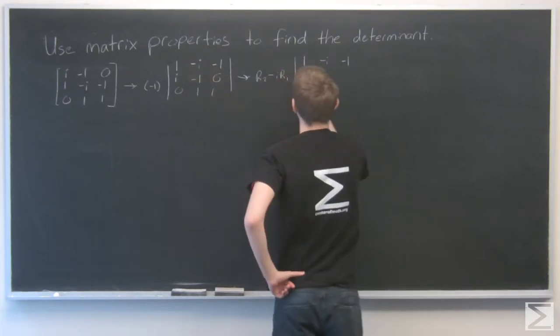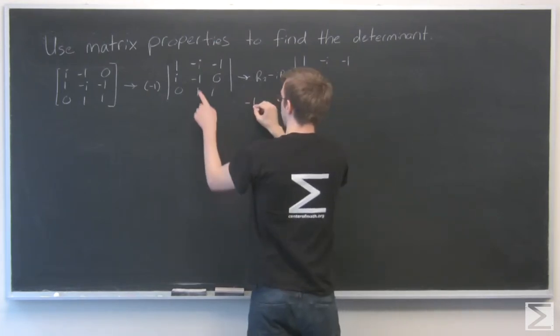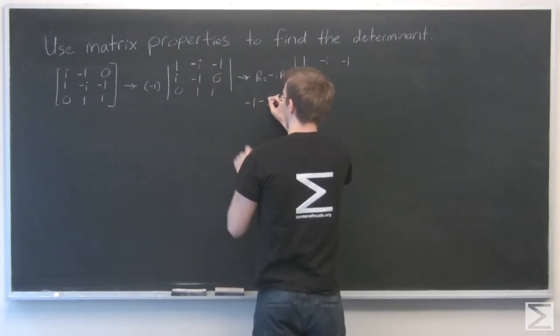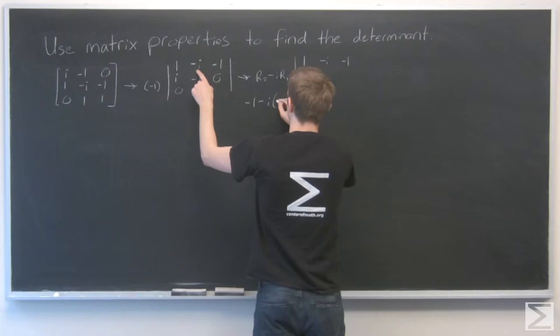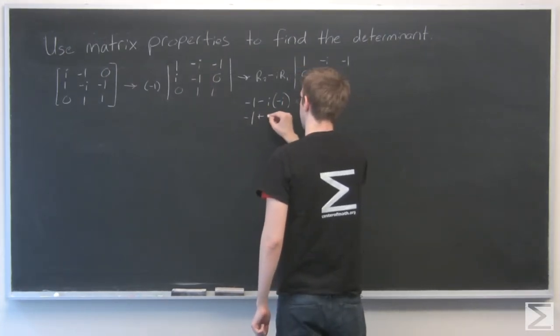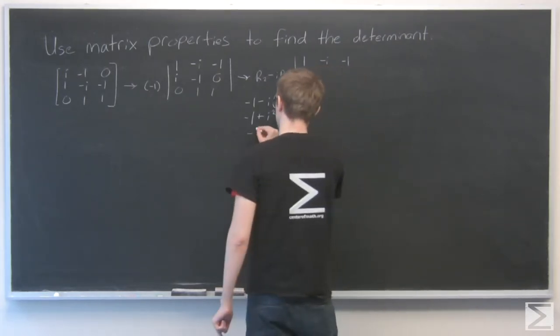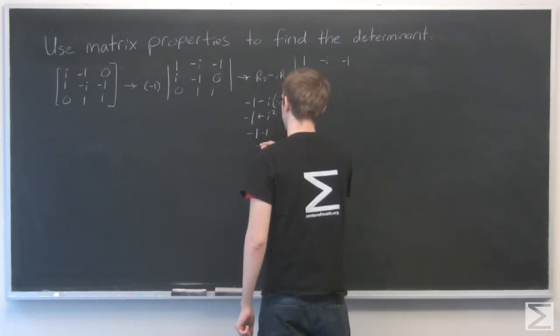i minus i times 1 is 0. I'm going to do this out below here. Minus 1 minus i times row 1, which is negative i. And that's minus 1 plus i squared. And i squared is negative 1, so that's minus 1, minus 1, or minus 2.